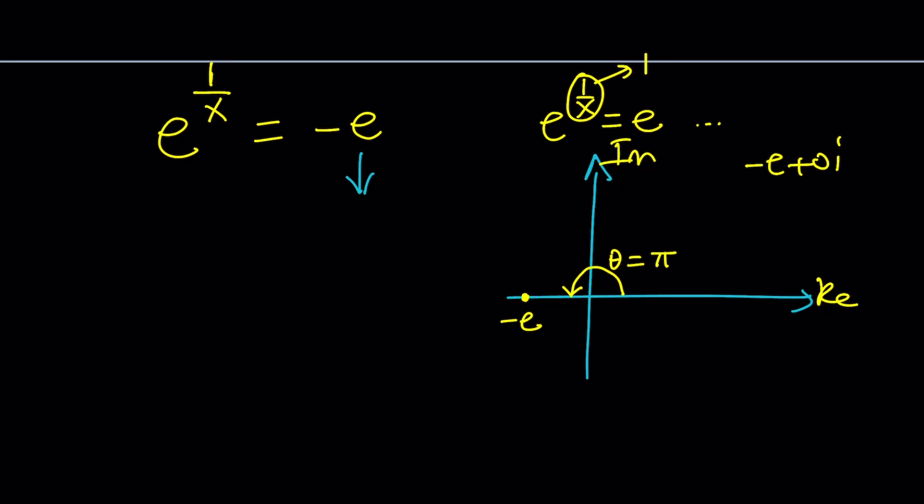Of course that's just one of the values. There are infinitely many ways you can write this angle, right? Because you can add multiples of 2 pi. So that's our number and obviously its argument r in this case would be e because it's the absolute value of negative e which is e.